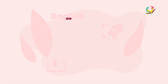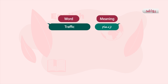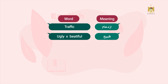The next word: traffic — the meaning of traffic is ازدحام (congestion/traffic). The next word: ugly means قبيح (ugly), and its opposite is beautiful, meaning جميل (beautiful).